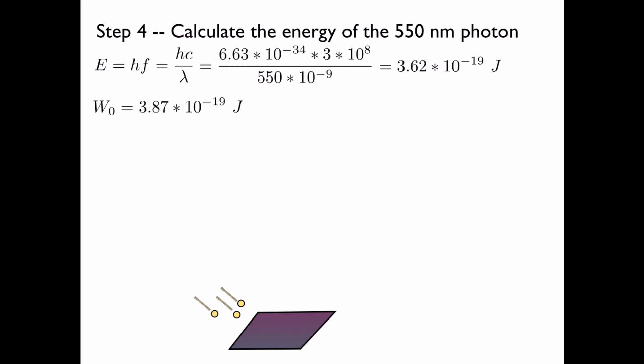Recall that the work function was 3.87 times 10 to the negative 19 joules. And because the energy of the incident photon is less than the work function, no electron is ejected. It doesn't matter how many photons there are incident on the surface. There could be a billion, but if all of the individual photons have an energy that's less than the work function, then not a single photoelectron will be ejected from the surface.